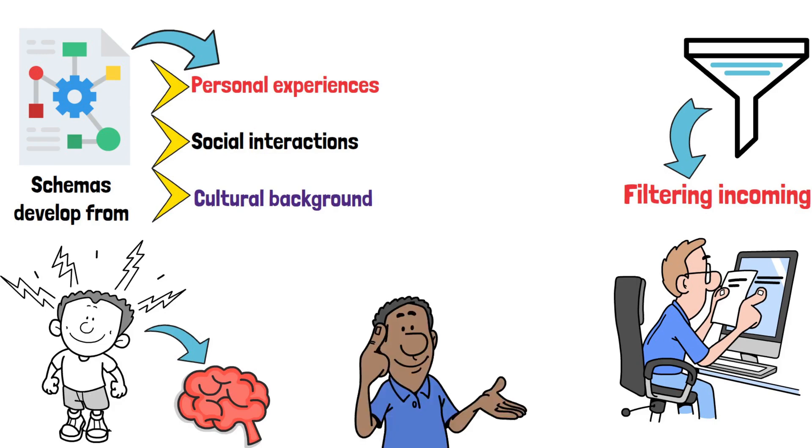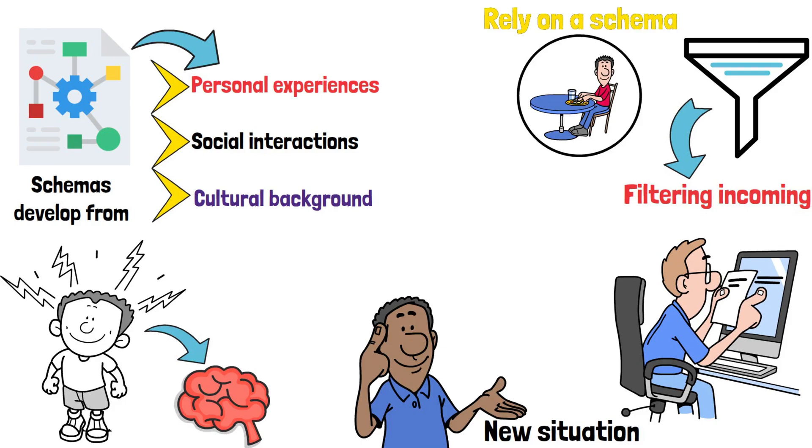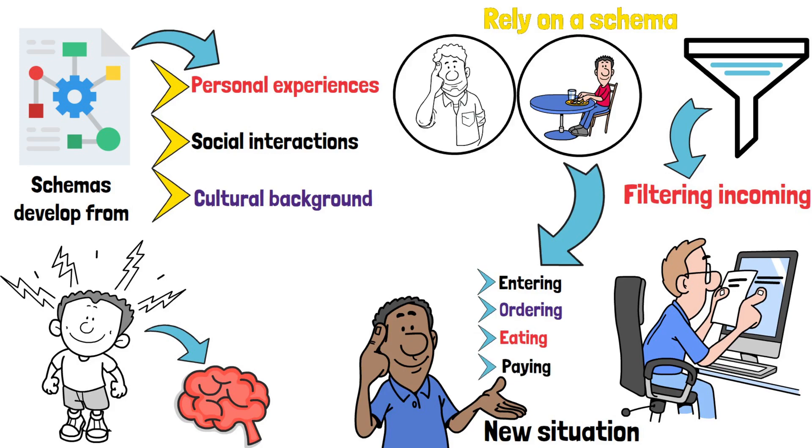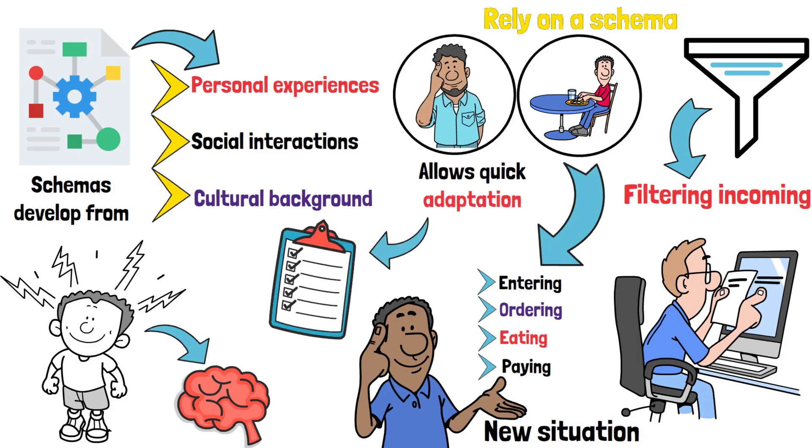For example, when encountering a new situation, such as dining at a restaurant, people rely on a schema for how this experience typically unfolds: entering, ordering, eating, and paying. This pre-existing knowledge allows quick adaptation without consciously processing every detail.